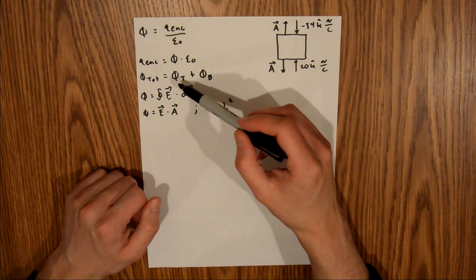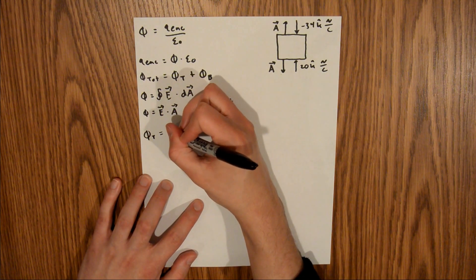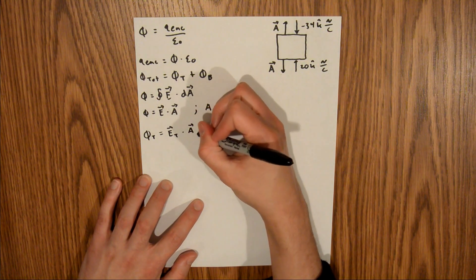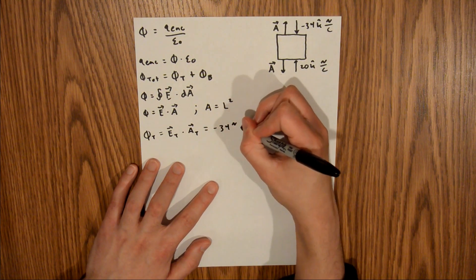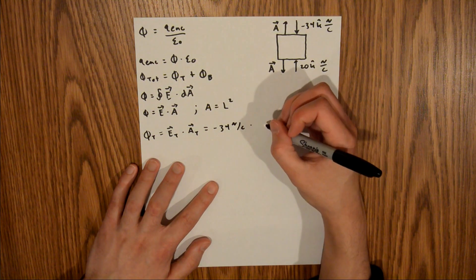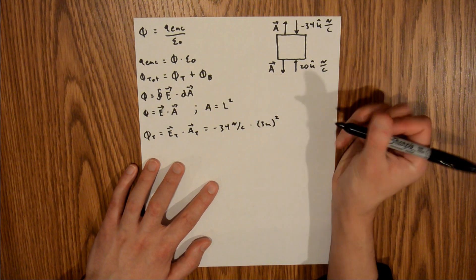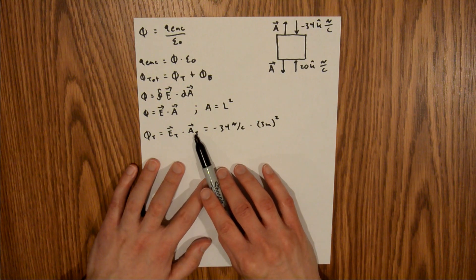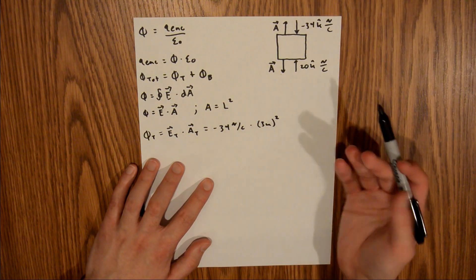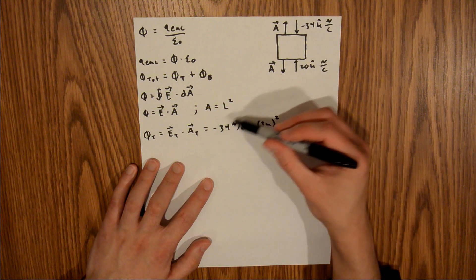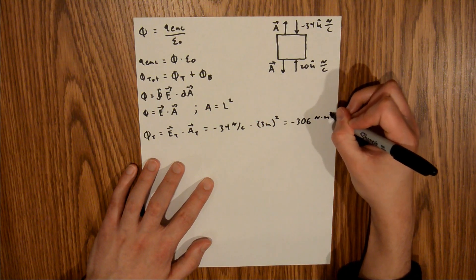Now we have the equations we need to calculate each individual flux, so I'll start with the flux on the top. That's going to be equal to the electric field on the top times the area of the top, which is negative 34 newtons per coulomb times the side length squared. We're told the side is 3 meters, so that's 3 meters squared. The vector normal to the area points in the positive z direction, so this quantity is positive, and plugging this in gives negative 306 newton·meters squared per coulomb.